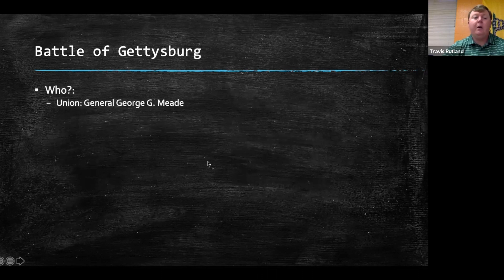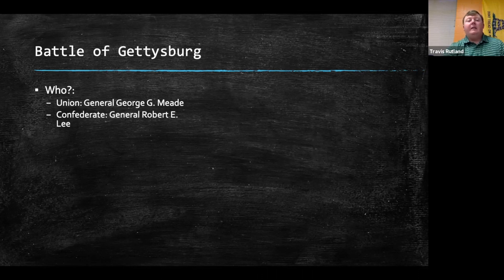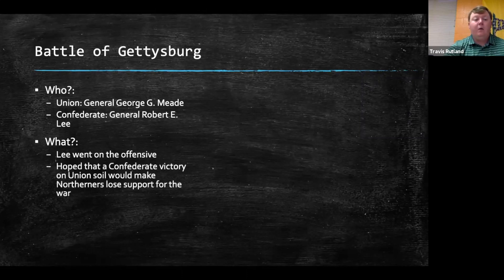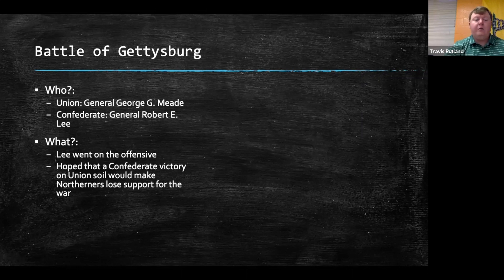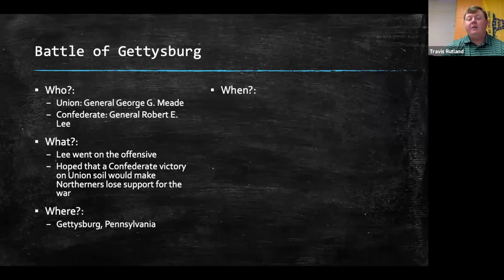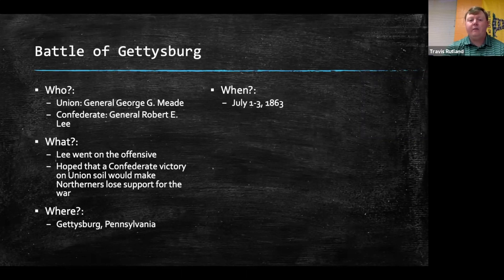The turning point of the war is Gettysburg. For the Union, General George G. Meade was there, and of course General Robert E. Lee for the Confederacy. Lee went on the offensive, again trying to invade the North at Gettysburg. He hoped that a Confederate victory on Union soil would make Northerners lose support for the war — the Confederates were trying to drag it out and get a win on Union soil, hoping the North would fold. Gettysburg is in Pennsylvania, and the battle takes place there.